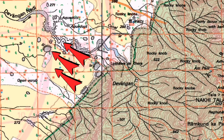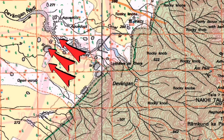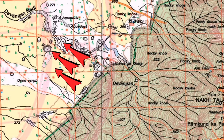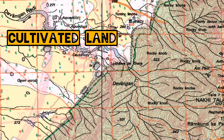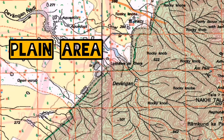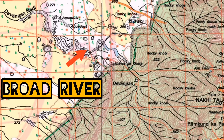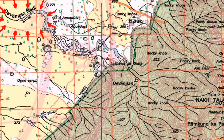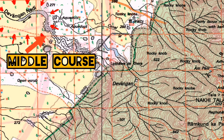Now look at the other half of the map — you can see yellow color. We know that yellow represents cultivated land, and cultivation most of the time happens in a plain area. So we consider that the river is in the plain area, and you can see that the river is a little more broader there. So here it is called Devagan Nadi, and here the river is in the middle course.